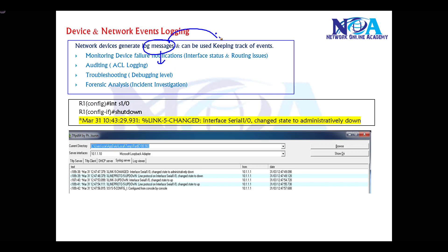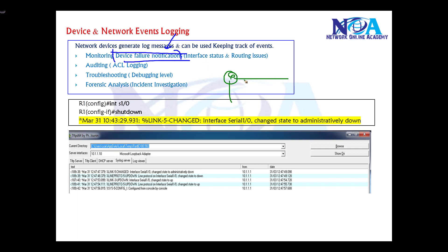These log messages are automatically generated, and by using these messages we can keep track of events occurring in your network. Some common log messages include device failure notifications — like if a router interface fails or goes down. It can also be messages like when establishing an EIGRP neighborship and the neighborship fails, or BGP connections going down.